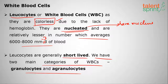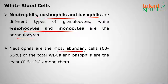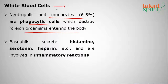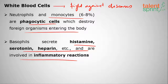Leukocytes are generally short-lived. There are two main categories of WBCs: granulocytes and agranulocytes. Neutrophils, eosinophils, and basophils are types of granulocytes, while lymphocytes and monocytes are agranulocytes. Neutrophils are the most abundant among total WBCs and basophils are the least. Neutrophils and monocytes are phagocytic cells which destroy foreign organisms entering the body.